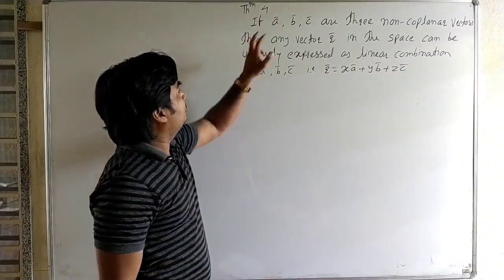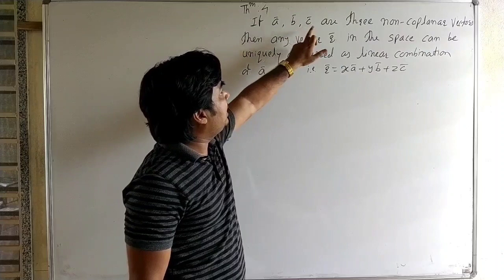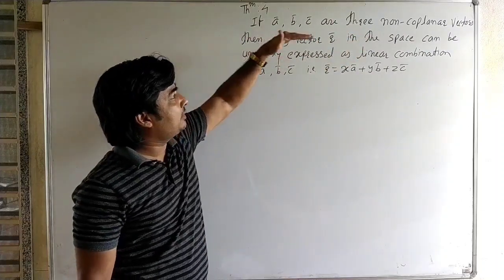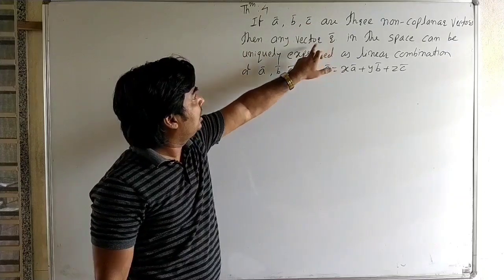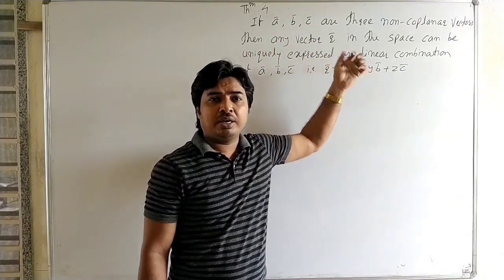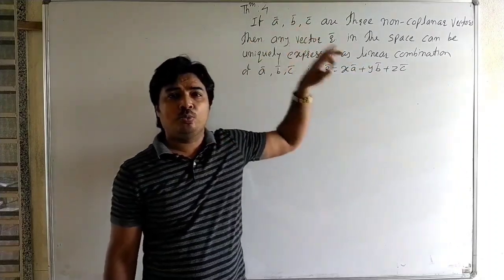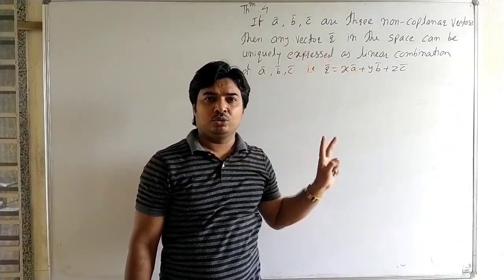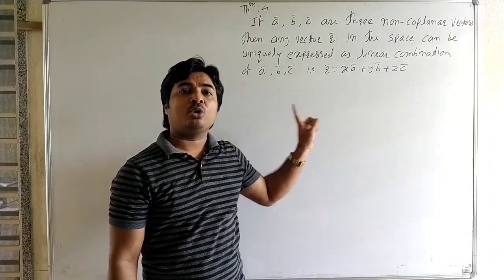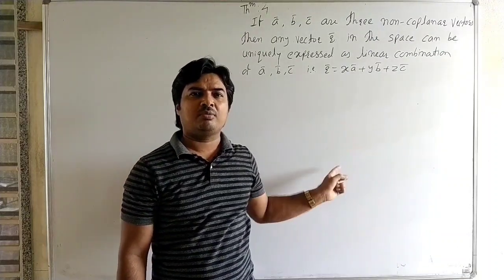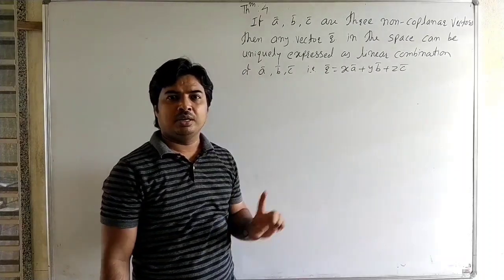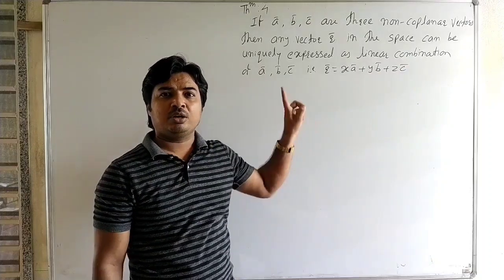Now we see Theorem 4. If a-bar, b-bar, and c-bar are three non-coplanar vectors, then any vector r-bar in the space can be uniquely expressed as a linear combination of a-bar, b-bar, and c-bar. In Theorem 2, we have already proved that if a-bar and b-bar are non-collinear vectors, then r-bar can be expressed as a linear combination of a-bar and b-bar — that is, the two-dimensional case.